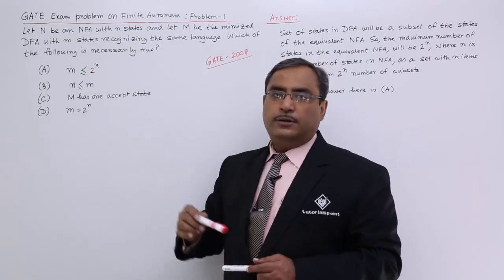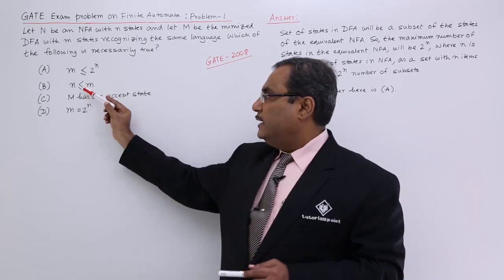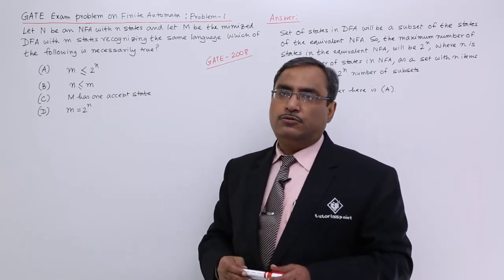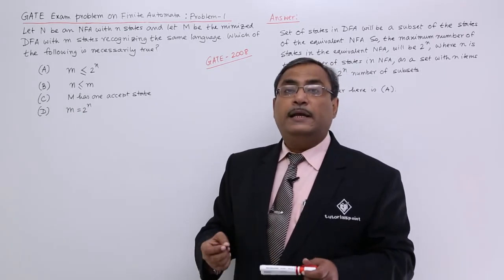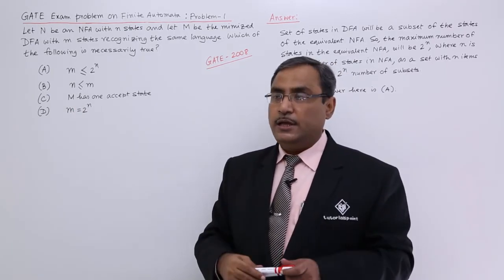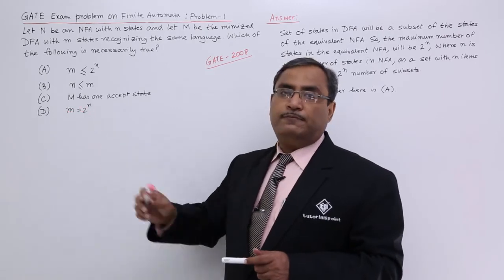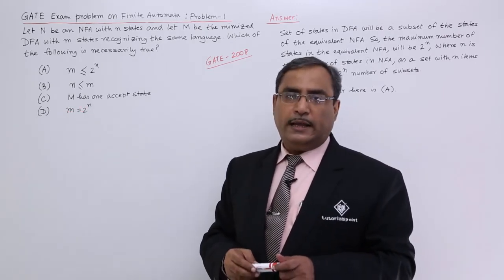That is why this inequality will be our answer and the others are not true. You cannot ensure that always m will be equal to 2 to the power of n. It might be a special case for a certain case study, but it is not going to happen always for all possible NFAs.